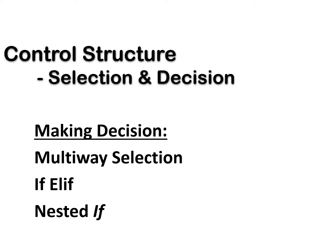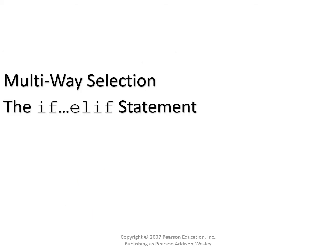Let's continue the topic about selection and decision control structure. For this video, I'm going to explain about multi-way selection, which includes if-elif and nested-if. Multi-way selection uses if-elif, where elif stands for else-if. In C++, they use else-if, but in Python it's simplified to elif.